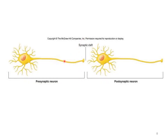The axon of one neuron connects to the dendrites of the next neuron. This junction is called the synapse. The first neuron is called the pre-synaptic neuron and the next one is called the post-synaptic neuron. The first neuron is the transmitting neuron and the second neuron is the receiving neuron — it receives the impulse transmitted by the first neuron.